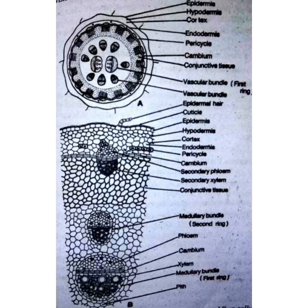The fourth feature is the pericycle, which lies inner to the endodermis. It is parenchymatous, but at some places it is represented by isolated patches of sclerenchyma. The fifth feature is the vascular system.